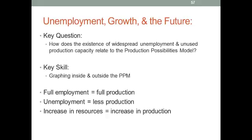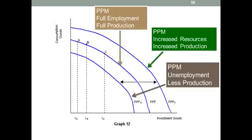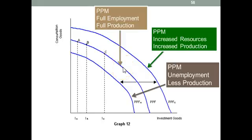Full employment is equal to full production. If you have unemployment, you're not maximizing your resources because there are people who could be working and producing but aren't, so you wind up with less production. If you have an increase in resources, this allows for an increase in production. Looking at this graph, the first line represents less employment and less production, the middle line represents full employment and full production, and the third line represents increased resources and increased production.